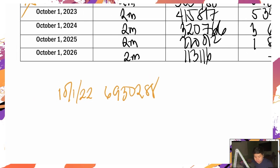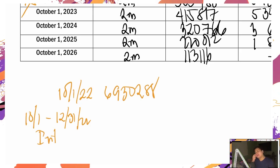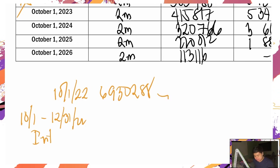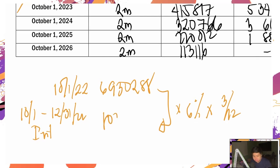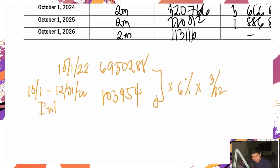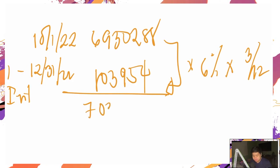Pagdating ng October 1 hanggang December 31, 2022 — ano kaya interest ko? Parang kanin lang, papatungan mo pa lang. So: 6,930,288 times 6% times 3 over 12 = 103,954. Pag tinotal ko yan: 7,034,242.